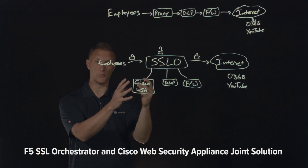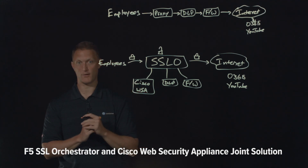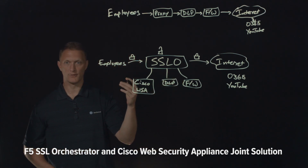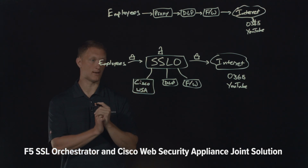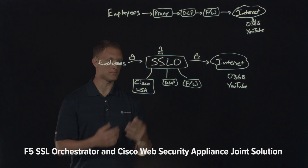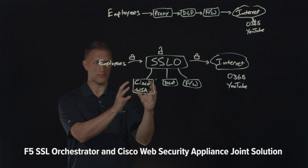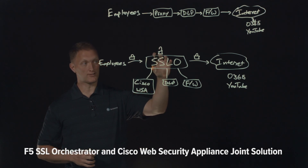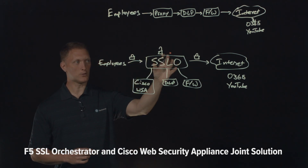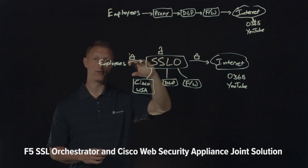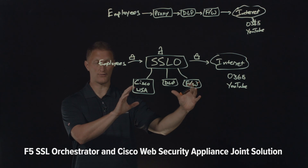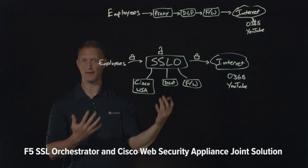The Cisco WSA, the Web Security Appliance, is a really powerful proxy device. It does a lot of cool things with user authentication, advanced malware protection built in, cognitive threat analytics, application visibility and control, file reputation, and acceptable use policies. The SSL Orchestrator also can act as a proxy, but the Cisco WSA is what specializes in that. The SSL Orchestrator has custom-built hardware to handle all the SSL and TLS offload — all that encryption and decryption. The other security devices can probably handle SSL offload as well, but they're not custom built for that, and there's a performance price to be paid.